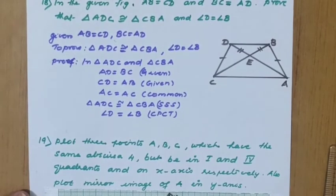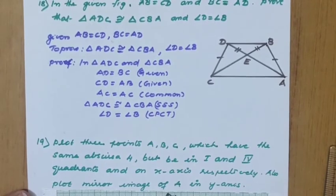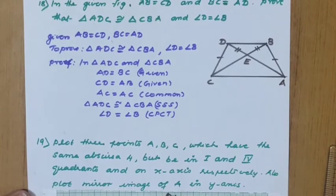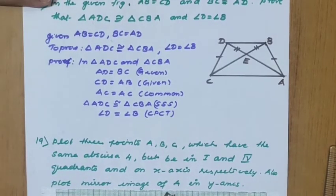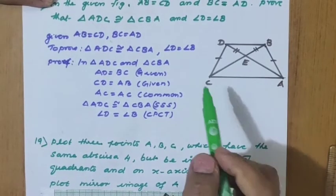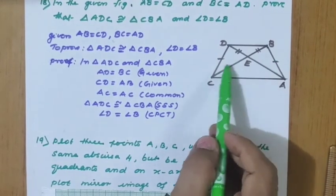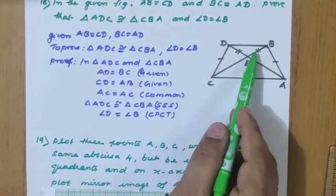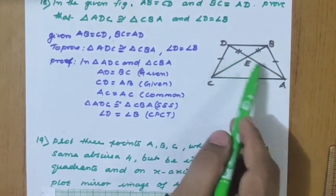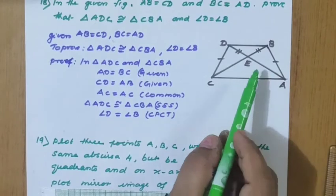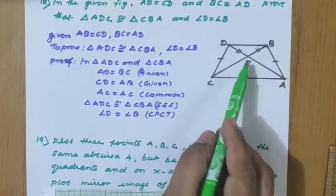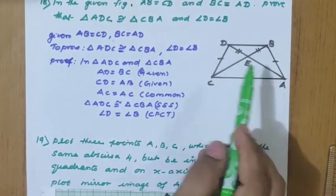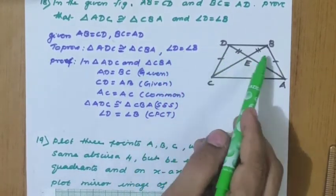Question 18: in the given figure, AB equals CD and BC equals AD. Prove that triangle ADC is congruent to triangle CBA, and angle D equals angle B. Given: AB equals CD, BC equals AD, and the diagonal AC is also given. To prove: triangle ADC is congruent to triangle CBA.